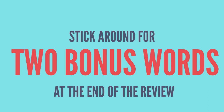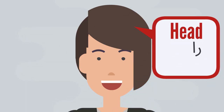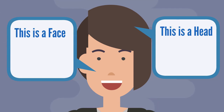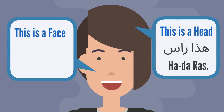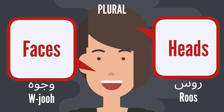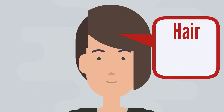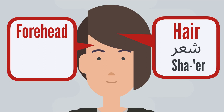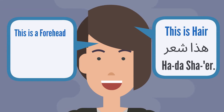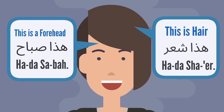Let's start with our first feature and that is head. The plural form for heads is — next is hair. Shair. Forehead. Sabah. This is hair — haada shair. This is a forehead — haada sabah.